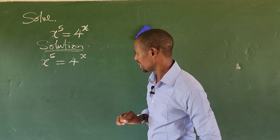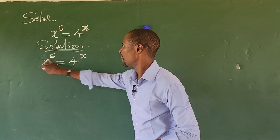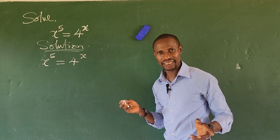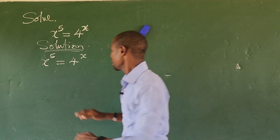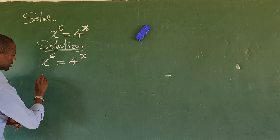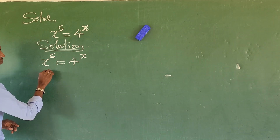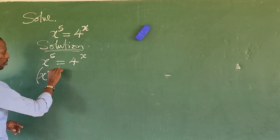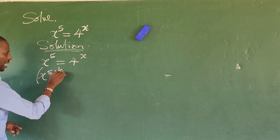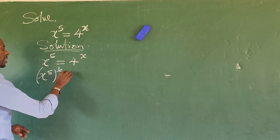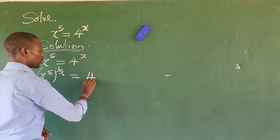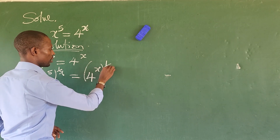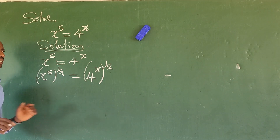Look at what I did here. I want to raise both sides of the equation to the power of 1 over x. So if I do that, I'm going to have x to the power of 5, raised to the power of 1 over x, equal to 4 to the power of x, raised to the power of 1 over x.